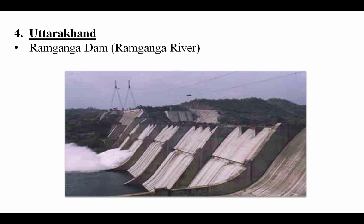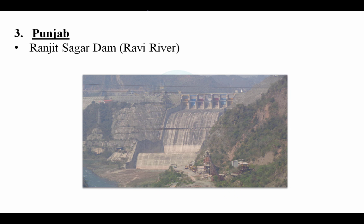From Punjab, you only need to remember one name: Ranjit Sagar Dam. It is constructed on the Ravi river and is an important dam for competitive exams.